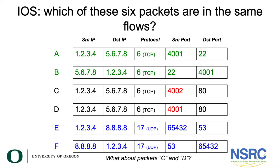Now let's have a look at the answer. Highlighted in green, packets A and B are part of the same flow — A is the outbound, B is the response. Note that Cisco IOS considers these different flows, but for our purposes, treating it as a bi-directional flow, they're part of the same one. Same is true for E and F — E is the outbound, F is the response. But packets C and D? Same source, same destination, same destination port, but different source ports — so these two packets are in different flows. They are different connections to the same destination.